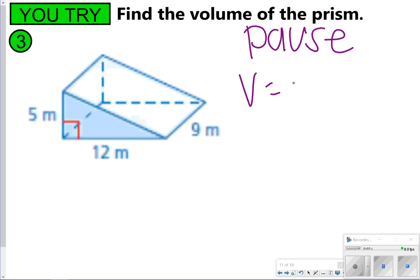All right, so once again, we're finding area of the base times the height. The base in this one is a 5 by 12 triangle, so 5 times 12 divided by 2, and then multiplying it by the height, which is 9.